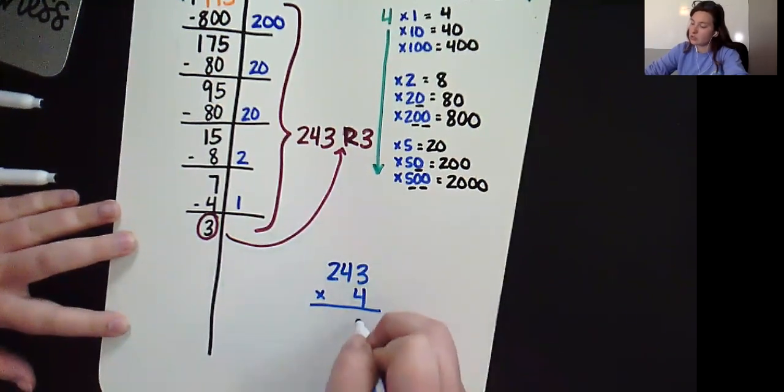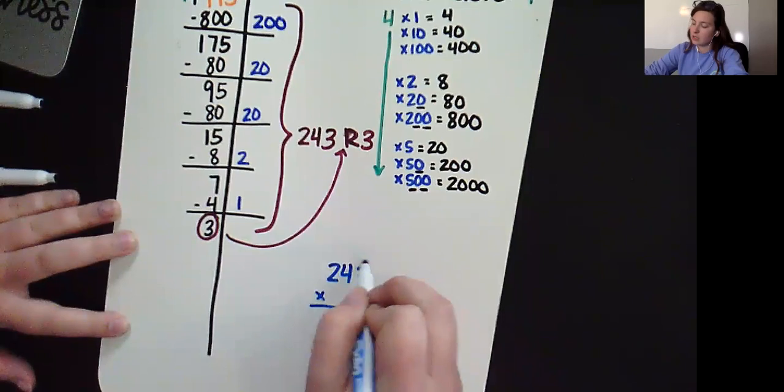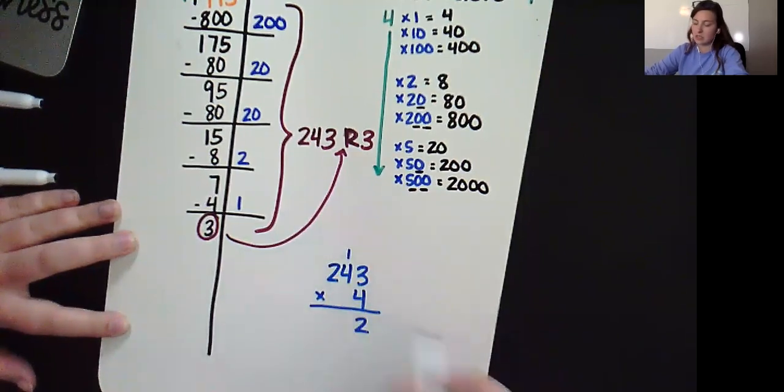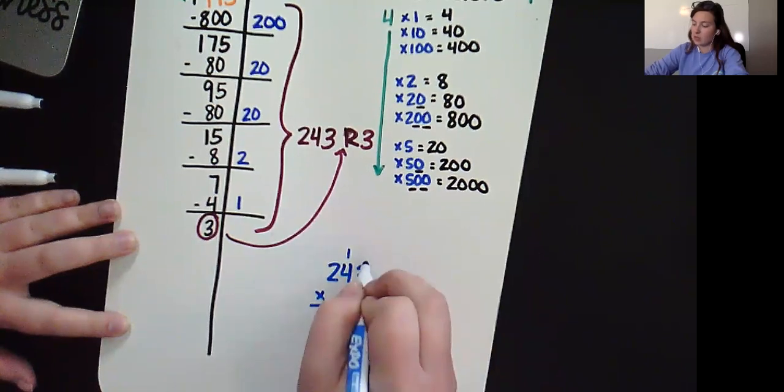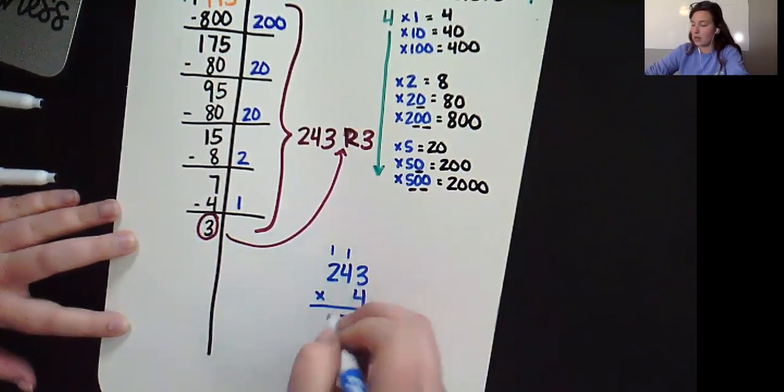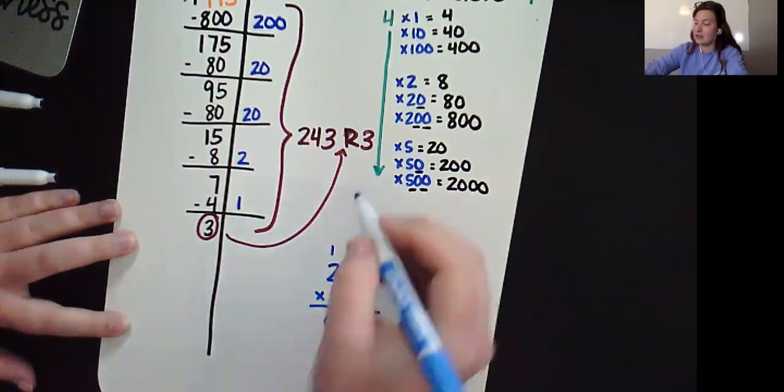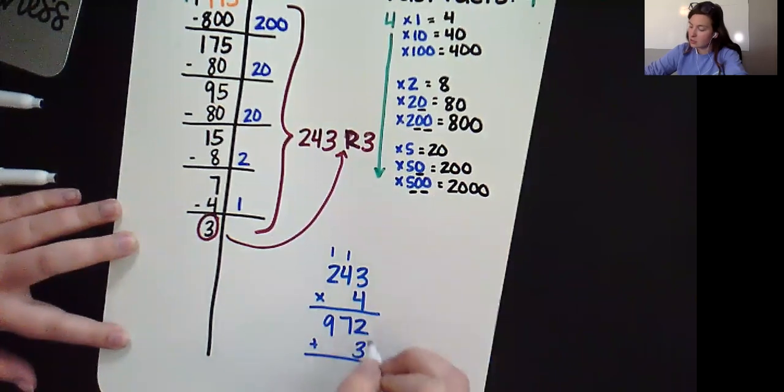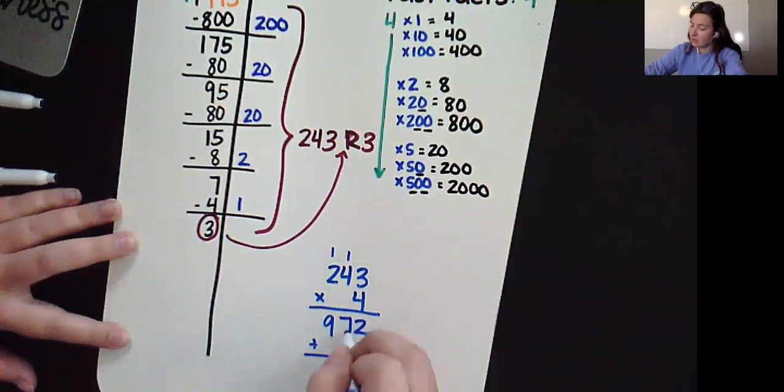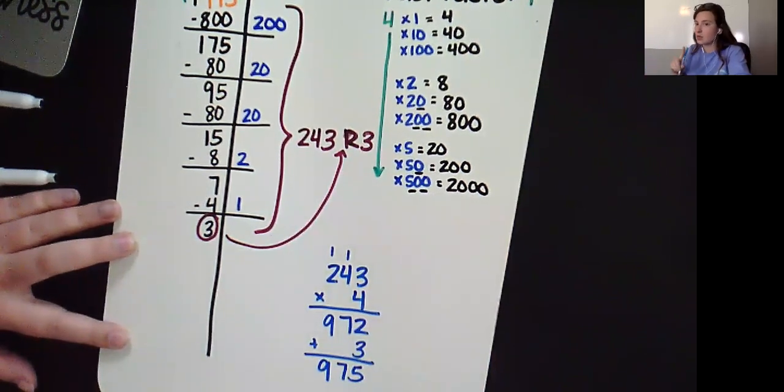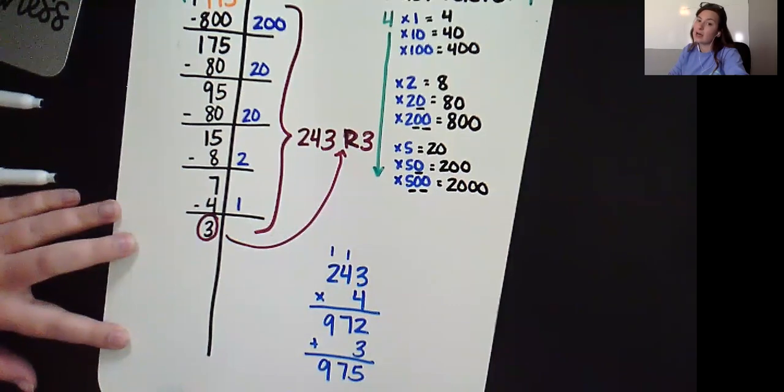4 times 3 is 12. 2 goes down. 1 goes up and over. 4 times 4 is 16 plus 1 makes 17. 7 goes down. 1 goes up and over. 4 times 2 is 8 plus 1 makes 9. And now I need to take my remainder of 3 and add that. 2 plus 3 is 5, 7, 9. Okay. If our dividend that we started with this whole time is 975, we did it right.